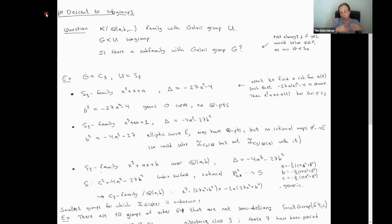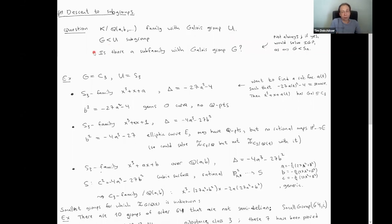One obvious question: I talked a lot about wreath products, direct products, and quotient groups, but not much about subgroups. Suppose you constructed a family with Galois group U and you have a subgroup G ≤ U — can you find a subfamily with Galois group G? For example, Hilbert's construction of A_n extensions starts with an S_n family like x^n + ax + b and finds specializations where the discriminant becomes a square, so the group drops from S_n to A_n.